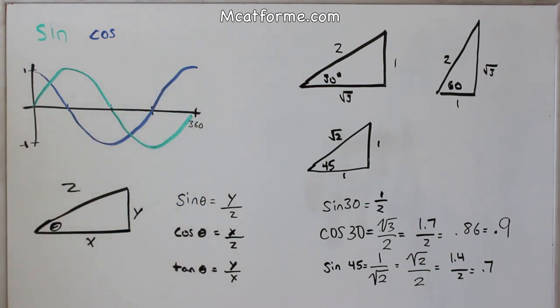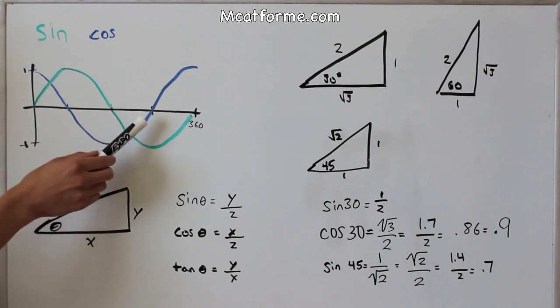Cosine is just shifted over slightly, so it starts at 1, then goes down to 0, negative 1, 0, and 1.